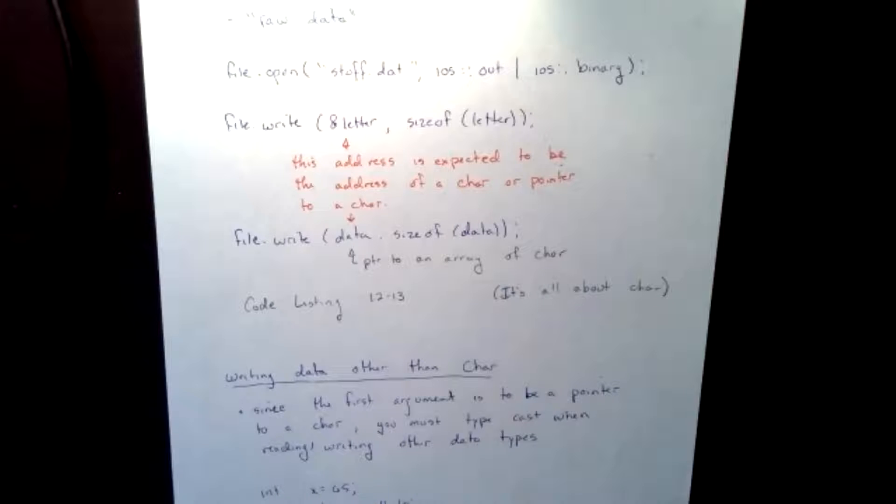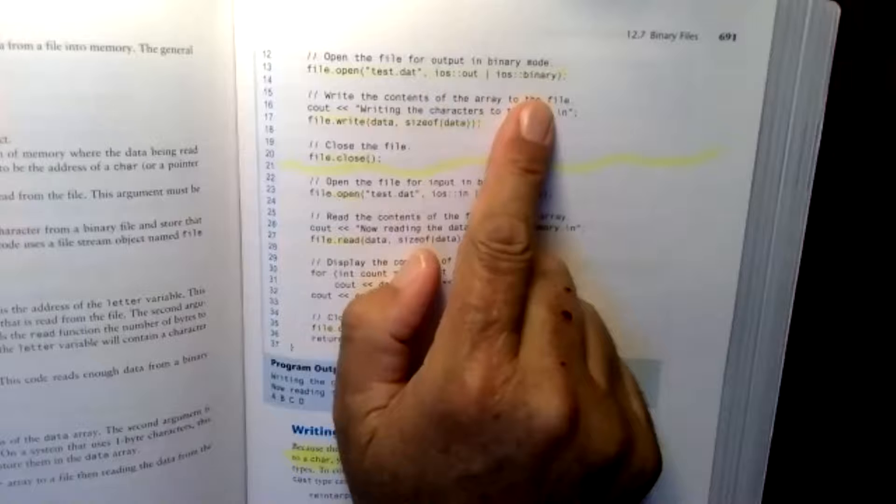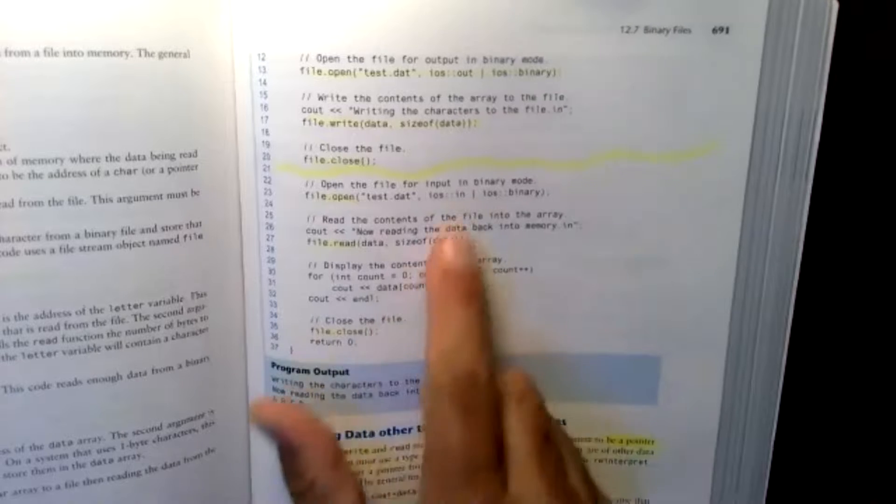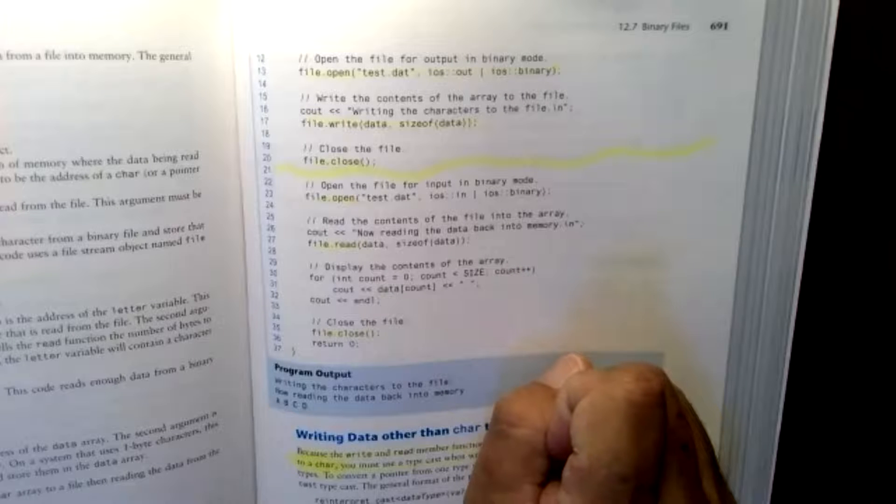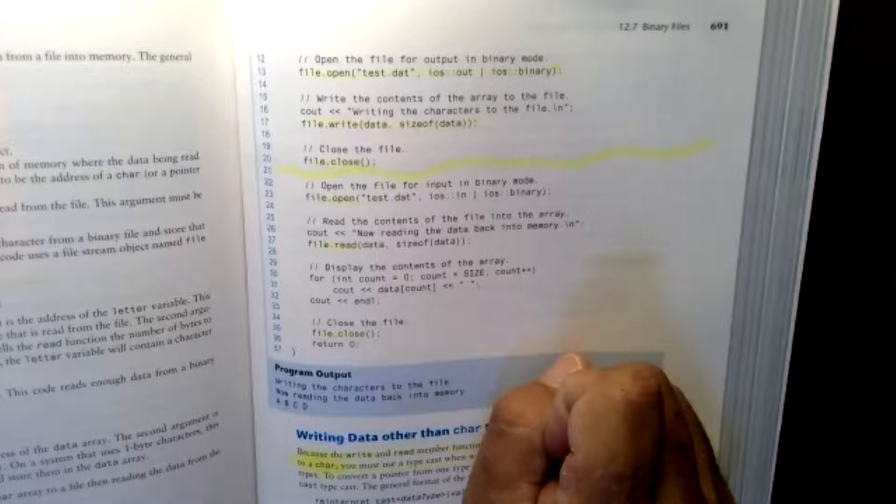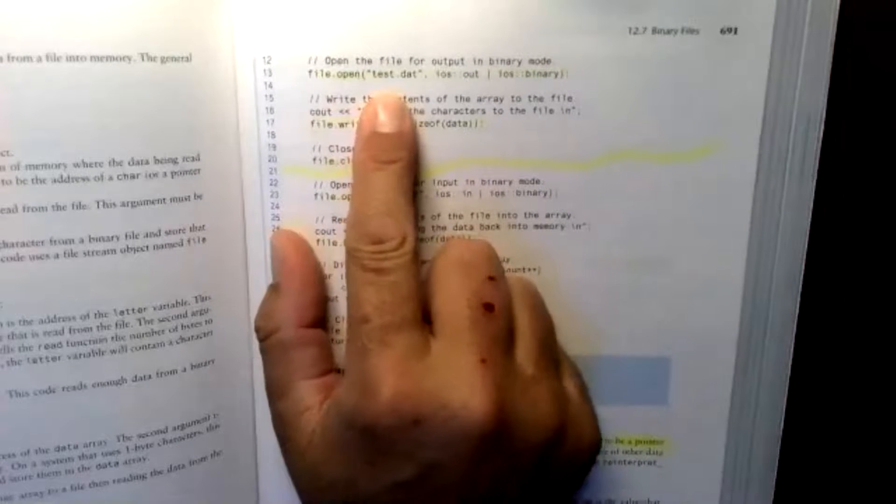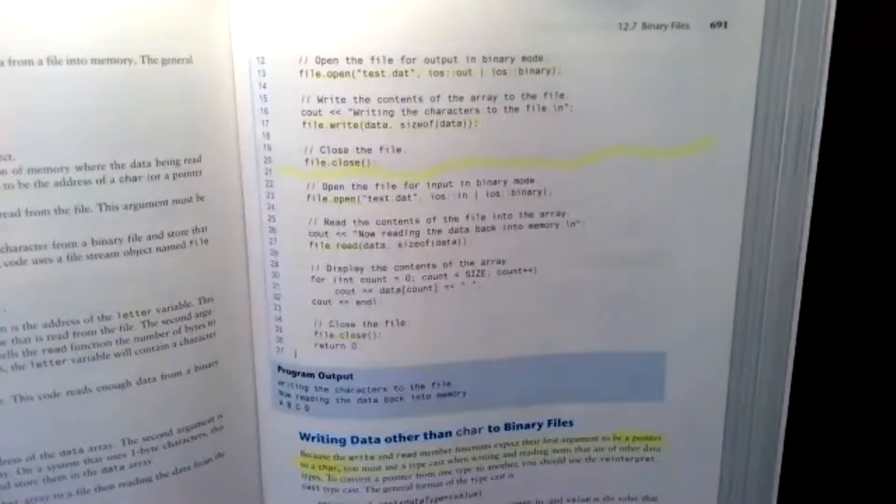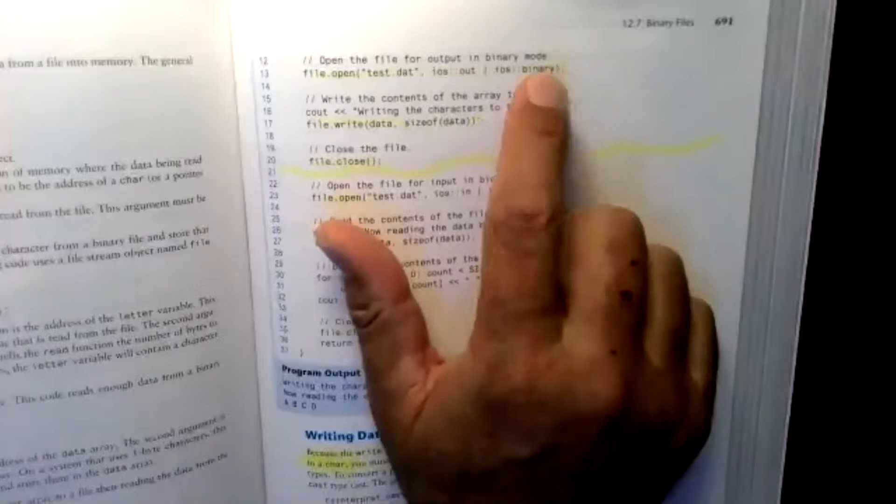You typed in code listing 1213. This was an example of what's going on here where you're getting it set up to send it as binary. You went and you wrote it, you closed it, you open up and read it.